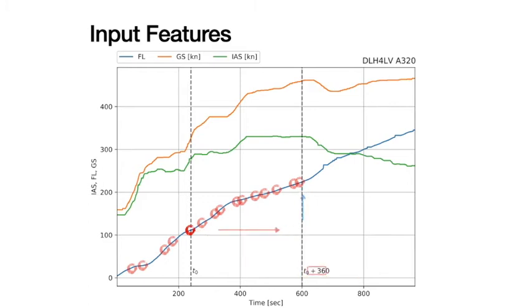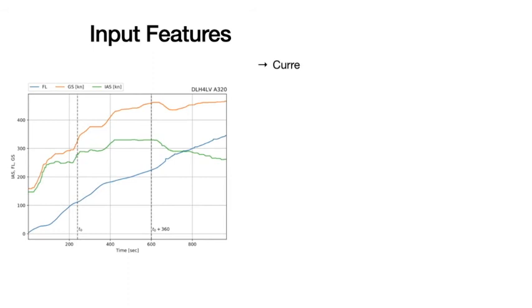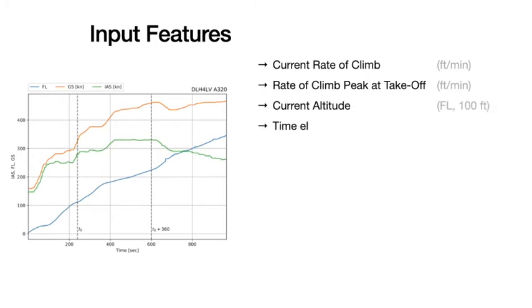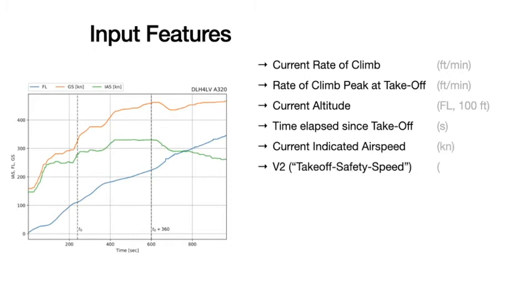The input features used to compose the feature vector are: the current rate of climb measured in feet per minute, the highest rate of climb in the first few seconds after takeoff, the current flight level, the time elapsed since takeoff, the current speed in knots, and the speed at takeoff or V2.